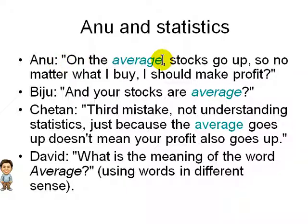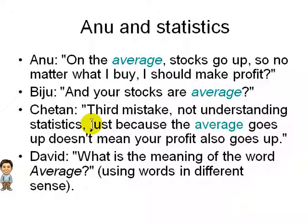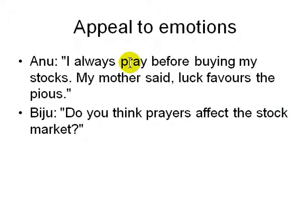Anu argues that on average stocks go up, so no matter what she buys she should make a profit. BG asks whether her stocks are truly average, like a mutual fund or basket of stocks. Chetan identifies the third mistake: not understanding statistics. Just because the average goes up does not mean your own profit goes up. David adds that the word 'average' can mean many things and involves time as well.